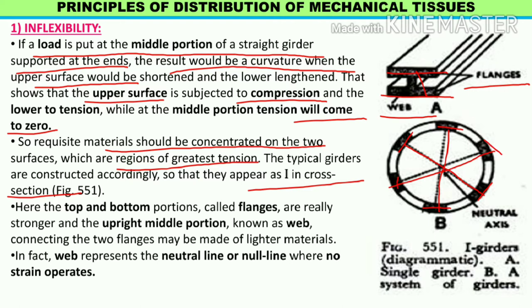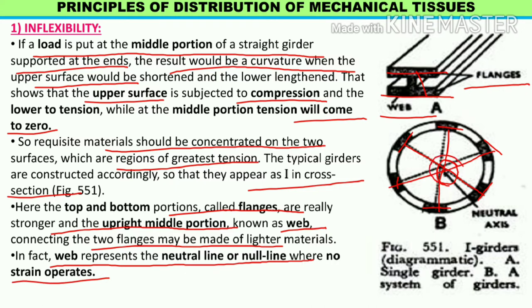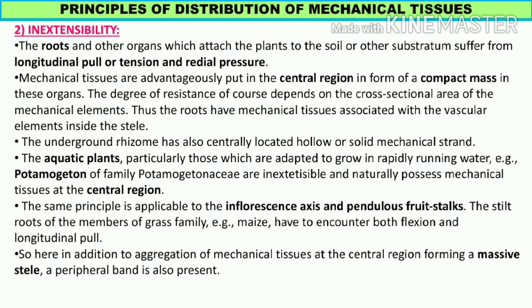The top and bottom portions are called flanges - these are really stronger and upright. The middle portion is known as the web. In a composite arrangement with multiple webs, the central portion has zero stress. The web connects the two flanges and may be made of lighter materials. The web represents the neutral line or null line where no strength operates - it is a stress-free zone. All the stress is held collectively by the two flanges and the web.